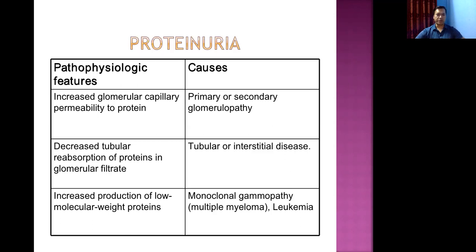Another pathophysiological mechanism is increased production of low molecular weight proteins, such as M protein seen in multiple myeloma and sometimes leukemia. These light chains are called Bence Jones proteins — a specific type of abnormal protein in the urine. Multiple myeloma is a malignancy derived from plasma cells, also known as plasma cell malignancy.